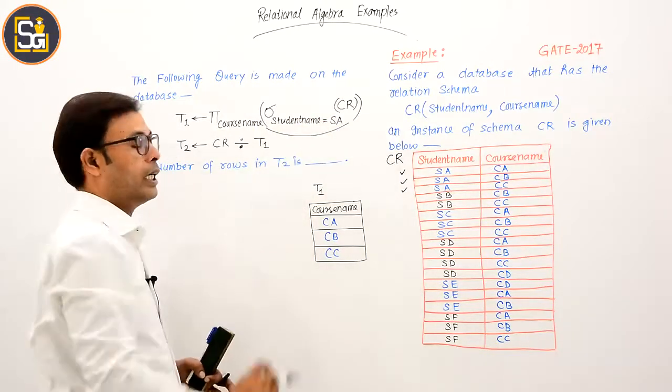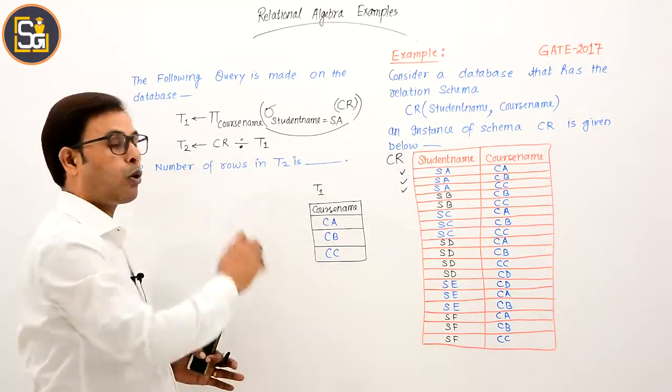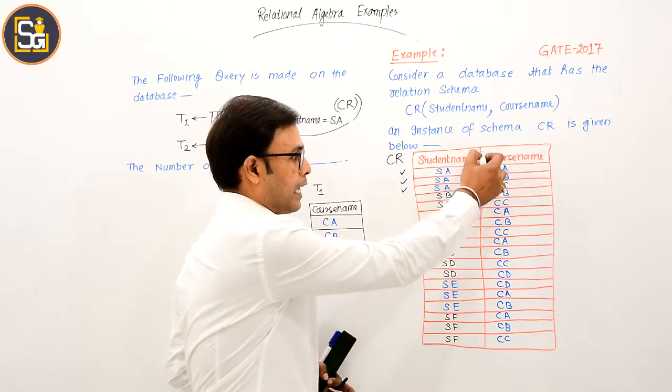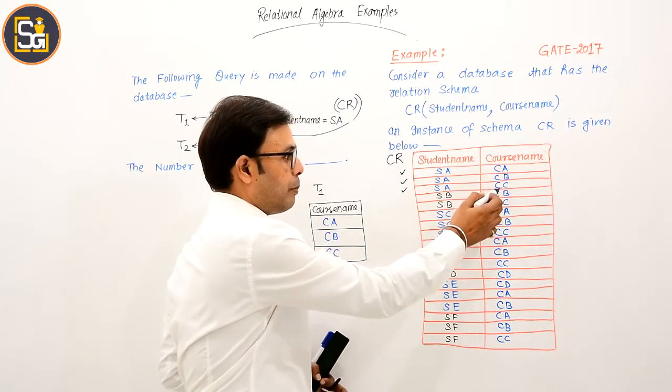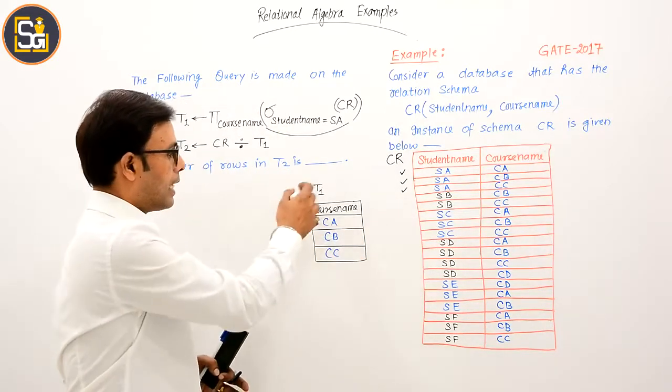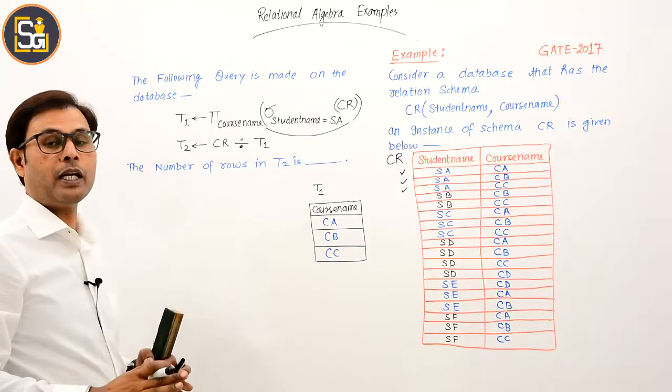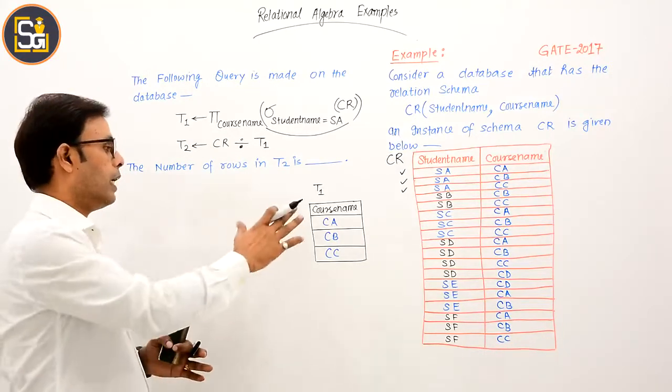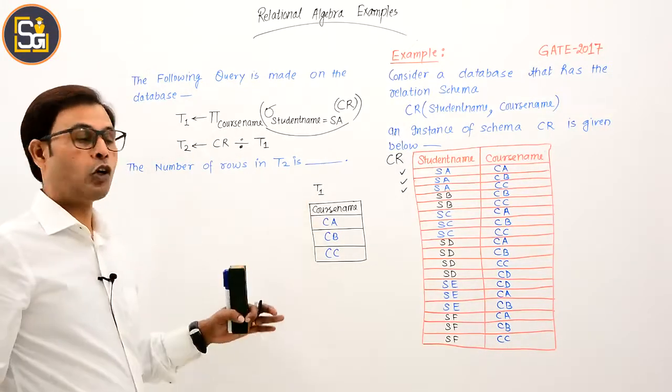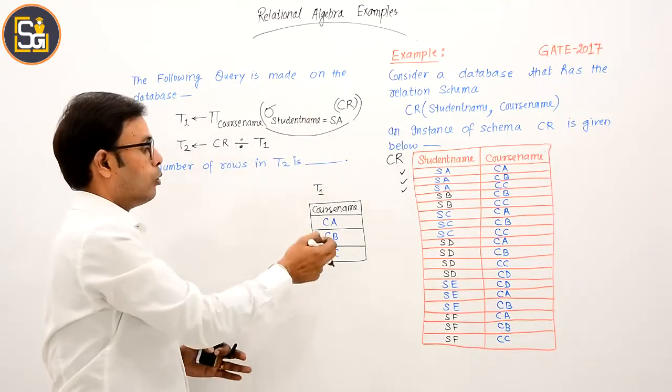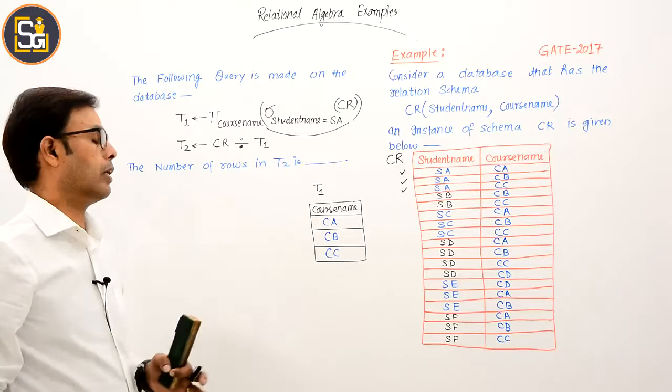From these, what is being done - course name is being projected. So course name is this attribute: CA, CB, CC. What I did here is took these and put them into a temporary variable, temporary relation T1. This way, whatever the result of this query is, from here to here, that relation's name is T1.